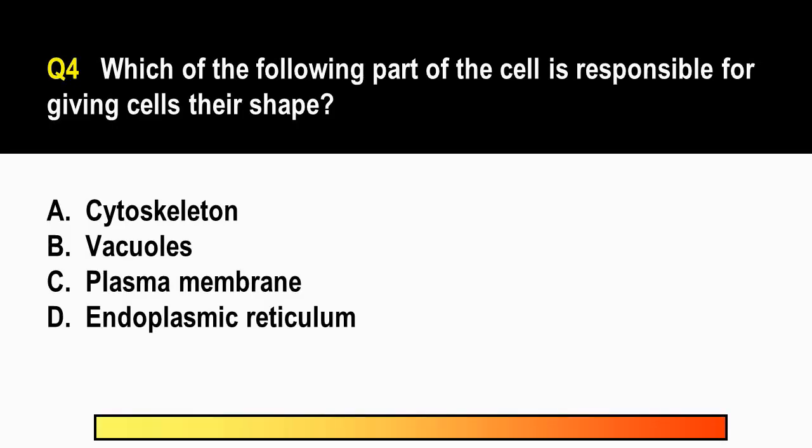The correct answer is letter A, Cytoskeleton. The cytoskeleton gives a cell its shape. It gives support and facilitates movement of the cell through three of the cytoskeleton's main components like microfilaments, intermediate filaments, microtubules. Actually, the term cytoskeleton will already give us a clue because cyto means cell and we are familiar with the word skeleton like our skeletal system which gives shape to our bodies. So letter A is the answer. Letter B, vacuoles, to some extent, would also give shape to the cell. They are also used for storing water and solutes. But the better answer is letter A.